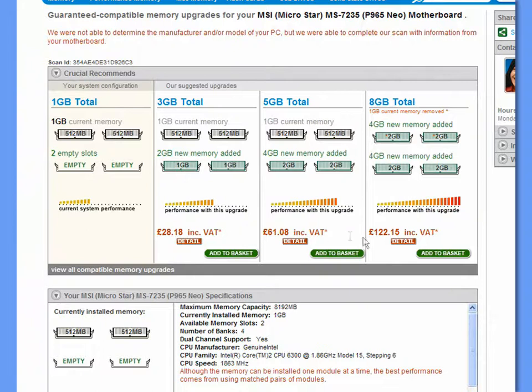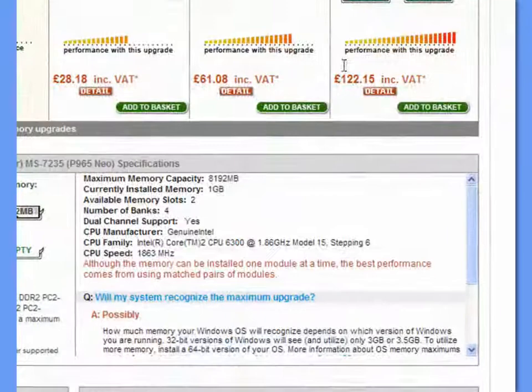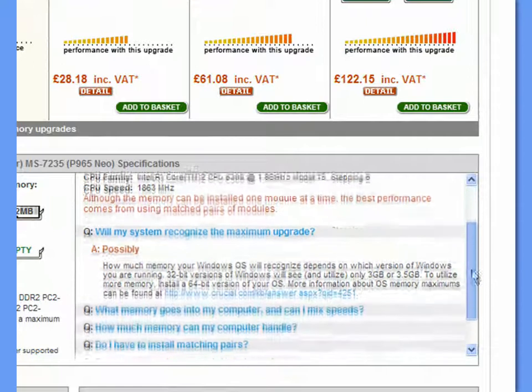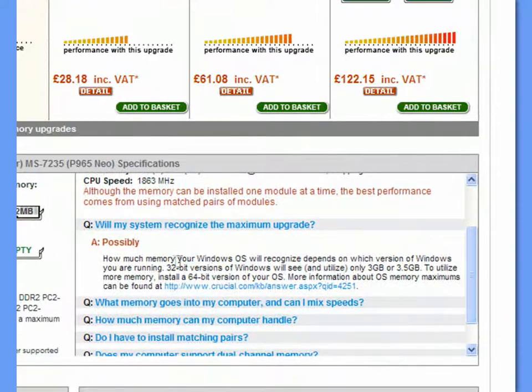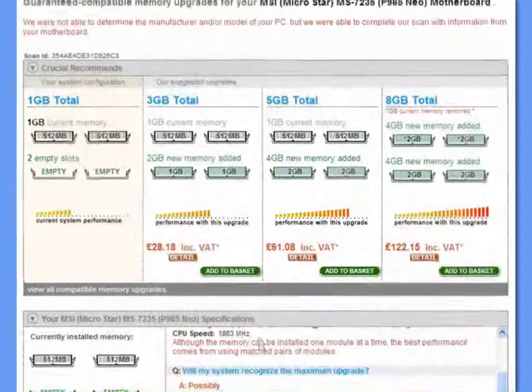So take into account how much memory your system can support. If you've got a 32-bit operating system, whether it's XP or Vista, you shouldn't bother with more than four gigabytes of RAM. So just take a look at those different options.